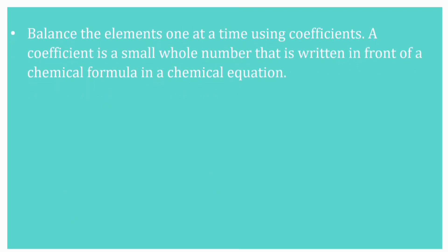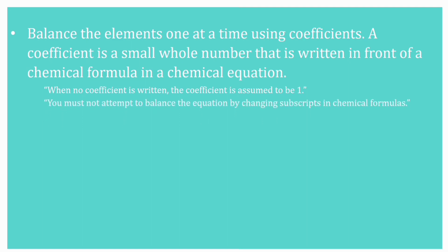Next, balance the elements one at a time using coefficients. A coefficient is a small whole number that is written in front of a chemical formula in a chemical equation. When no coefficient is written, the coefficient is assumed to be 1. You must not attempt to balance the equation by changing the subscripts in the chemical formulas.